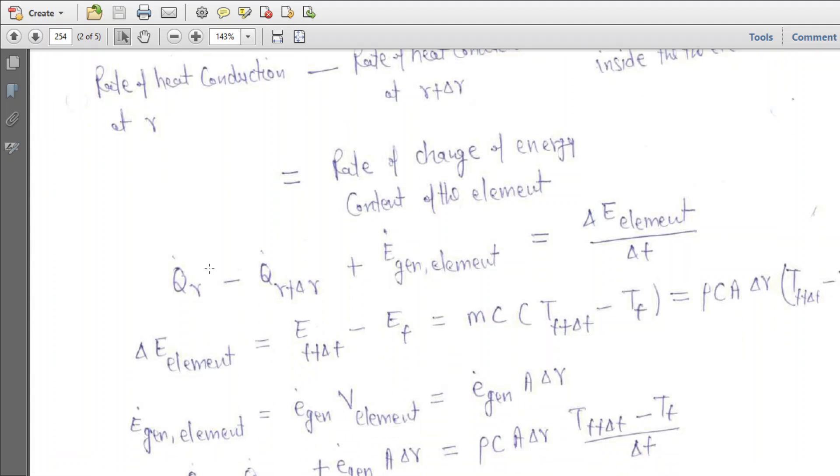Substituting these terms, we have Q̇_R minus Q̇_(R+ΔR) plus Ė_gen of the element plus ΔE_element divided by Δt.